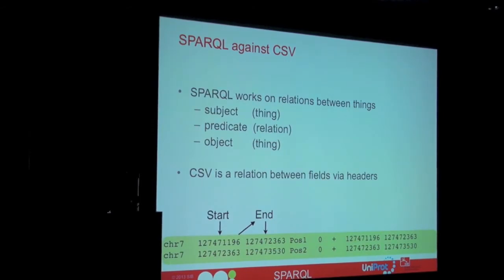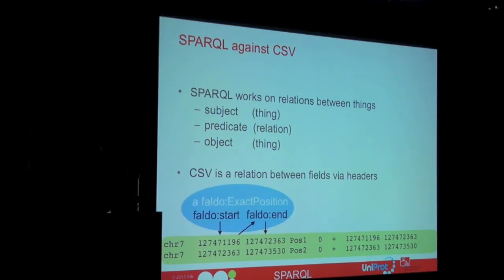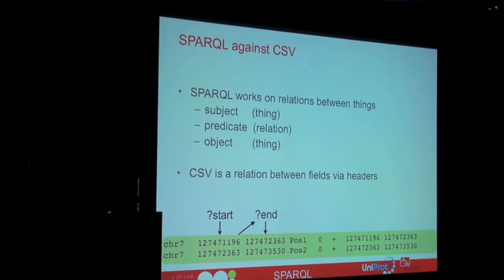SPARQL works on relations between things — where you have a subject, a predicate, a value, and a relation to another value. You can always query on it. Compared to values, there are just relationships between fields — a start which is related to an end in some way. If you express that using a standard ontology like FALDO, where you say something is a position with a begin and end on a reference sequence, then you can actually do queries. All those start and end positions can be replaced by SPARQL variables.